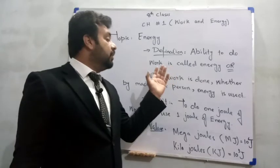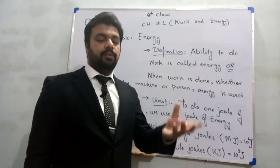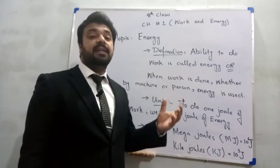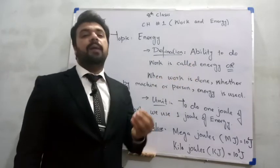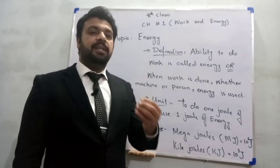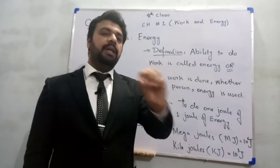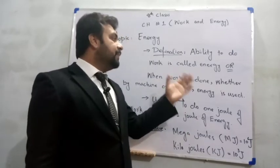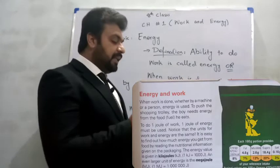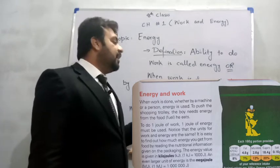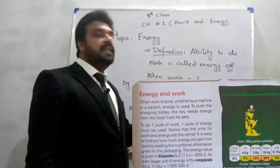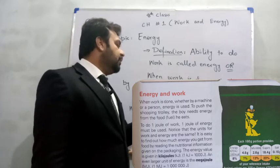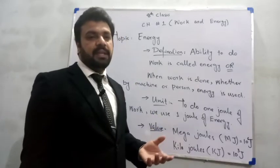Dear cadets, ہمارا اگلا topic ہے Energy۔ جس طریقے سے work کی definition، formula اور unit پڑھا، اسی طریقے سے energy کو پڑھیں گے۔ Energy کی definition: ability to do work — کام کرنے کی قابلیت کو energy کہتے ہیں۔ یا دوسری definition: when work is done, whether by machine or person, energy is used.